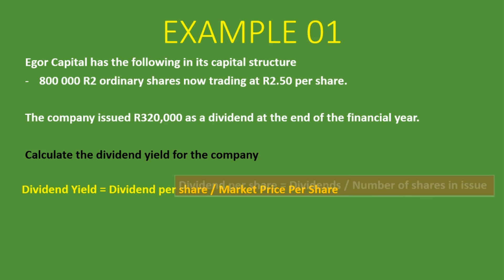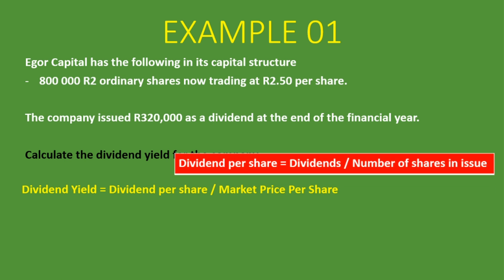The dividend per share is the dividends the company paid out divided by the number of shares in issue. We know the company paid out R320,000 as a dividend, so our numerator is R320,000. We divide that by the number of shares in issue — we are told 800,000 ordinary shares, so the company has 800,000 shares in issue.